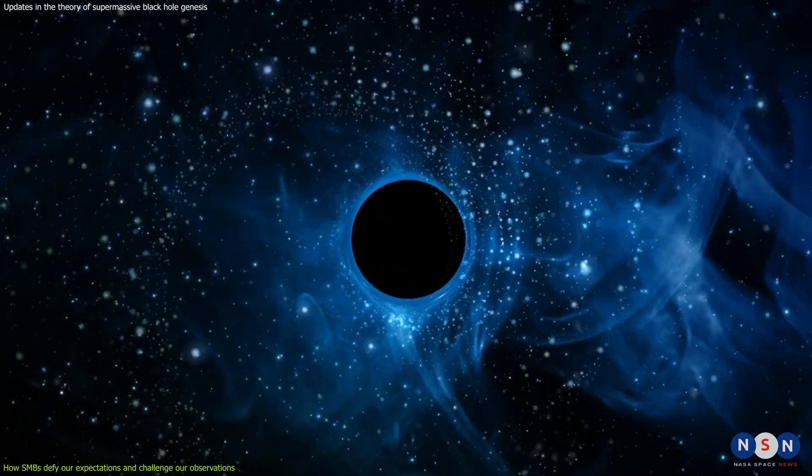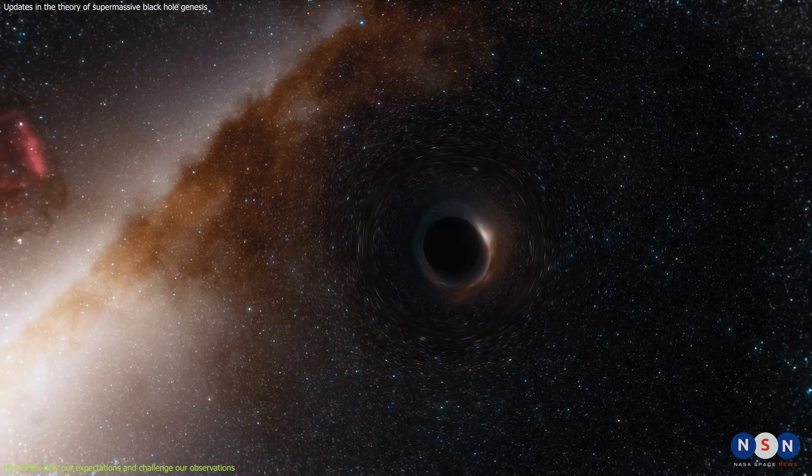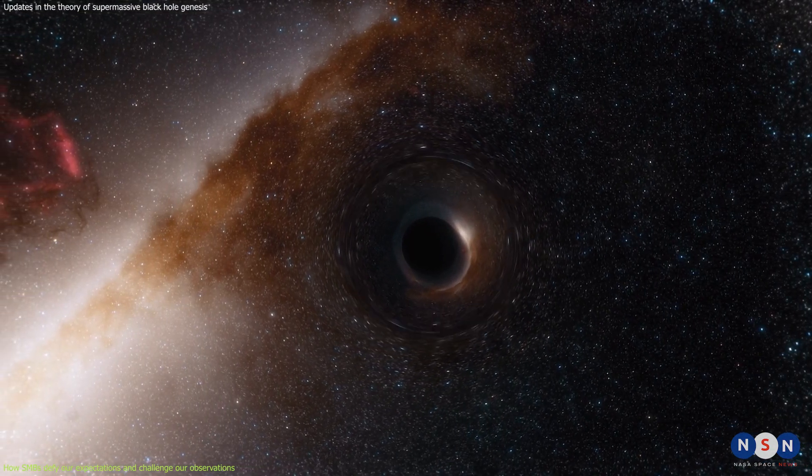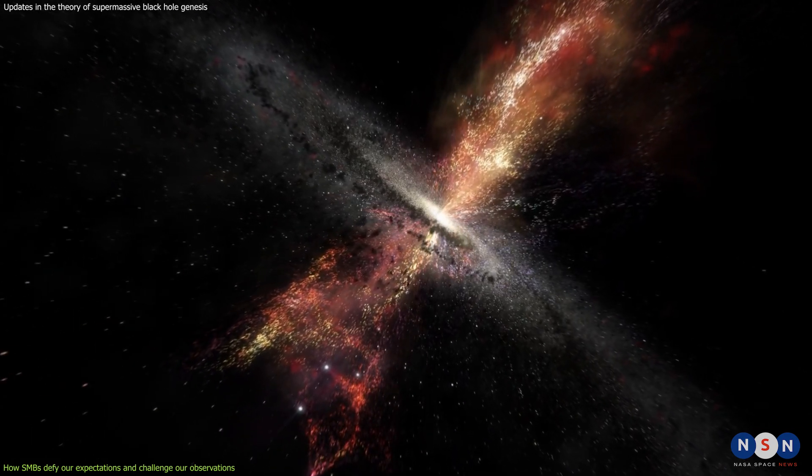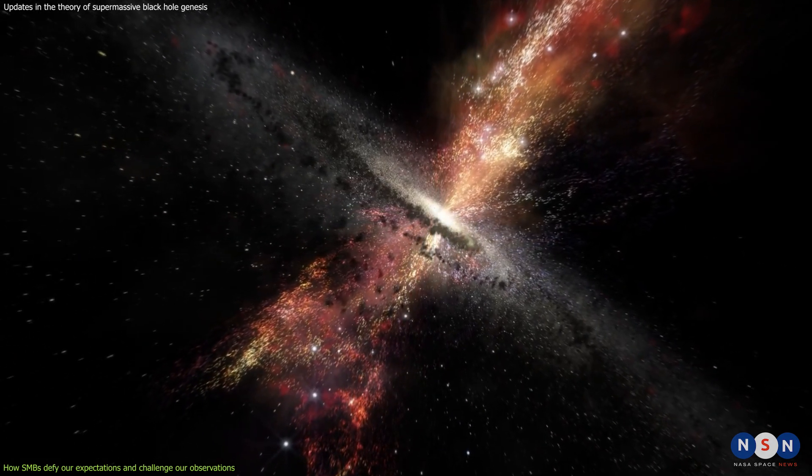This is remarkable because it shows that supermassive black holes were already present in the early universe when galaxies were still forming and evolving. But how did these supermassive black holes form in such young galaxies, and what role did they play in shaping their host galaxies and their surroundings? These are some of the questions that astronomers have been trying to answer for decades.